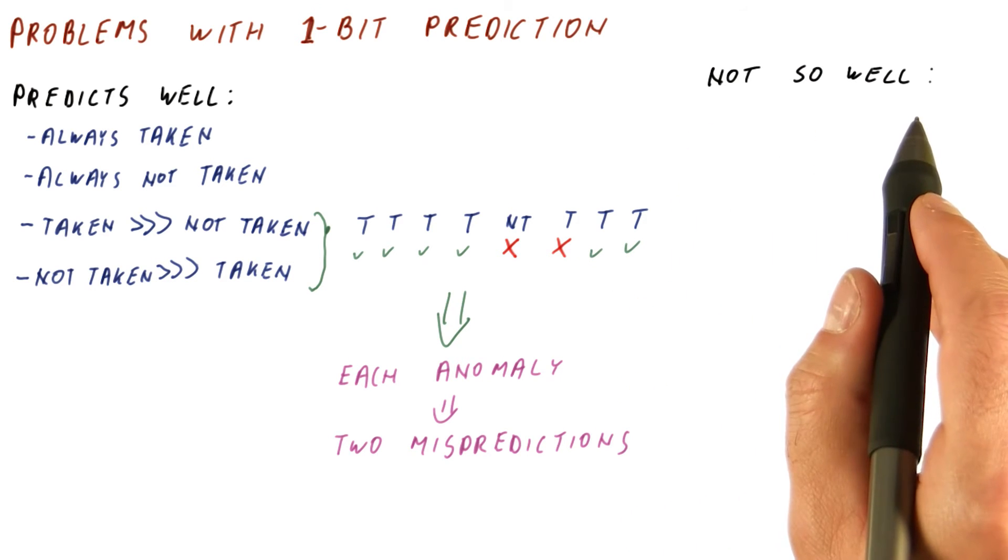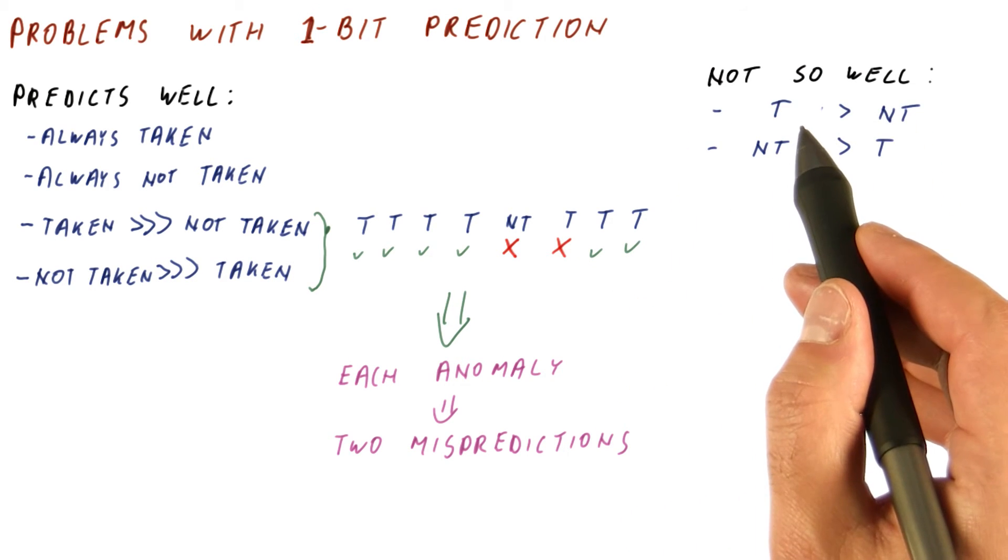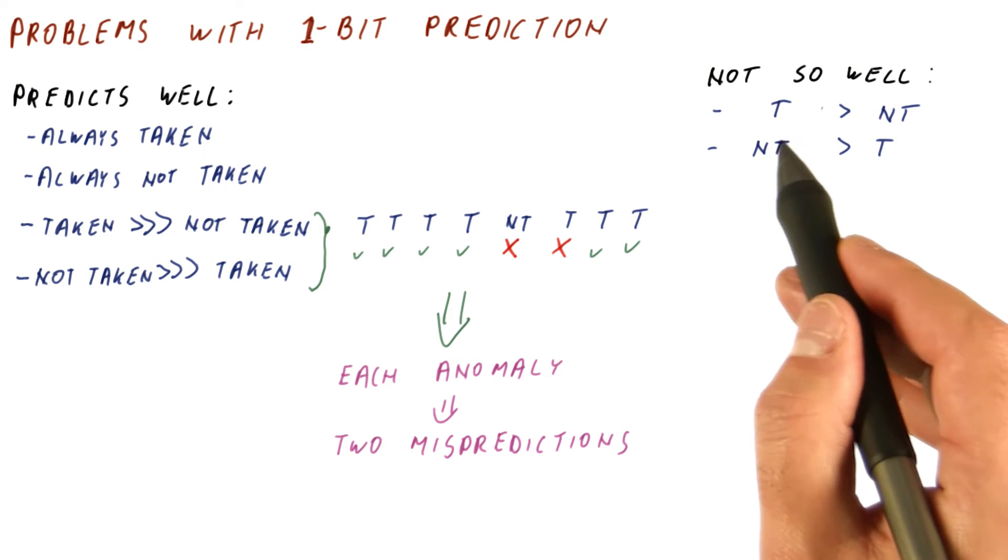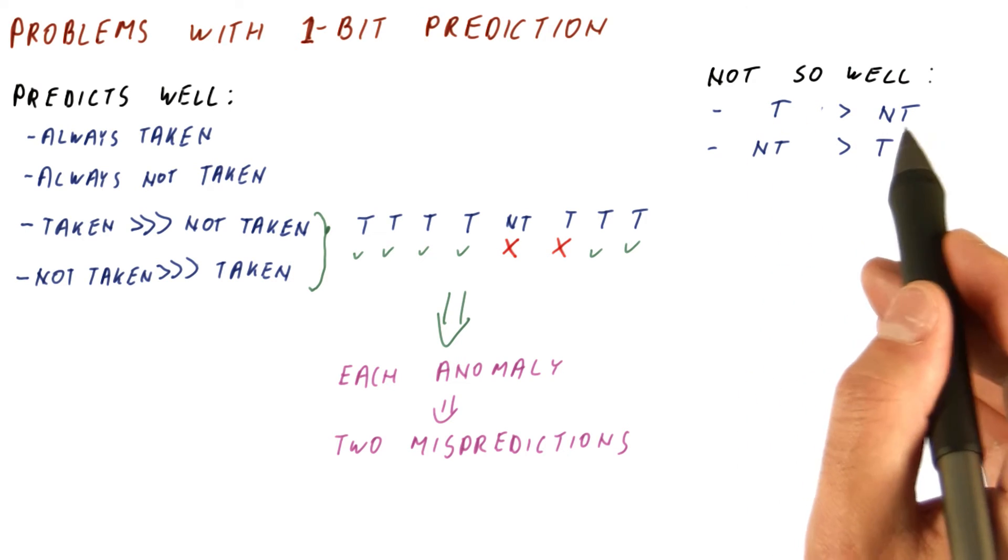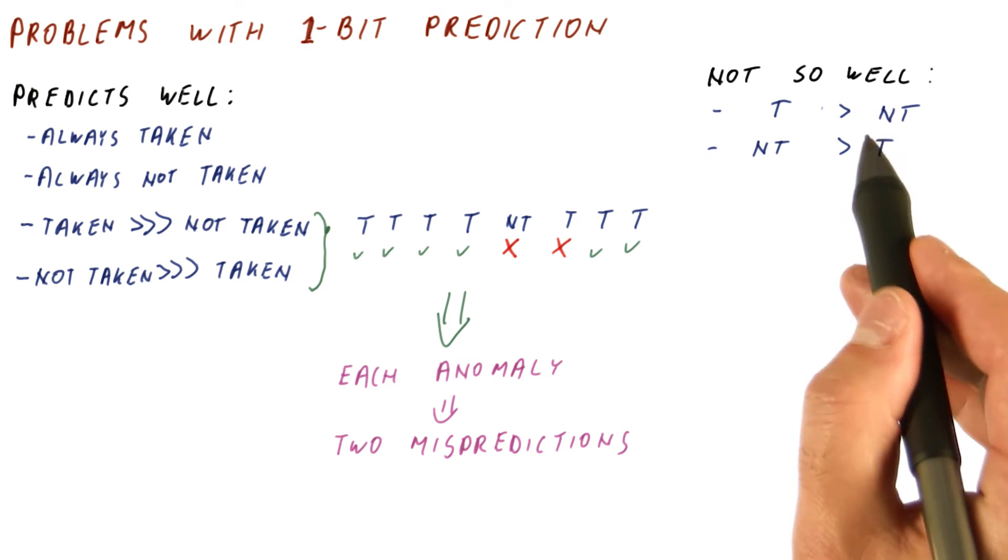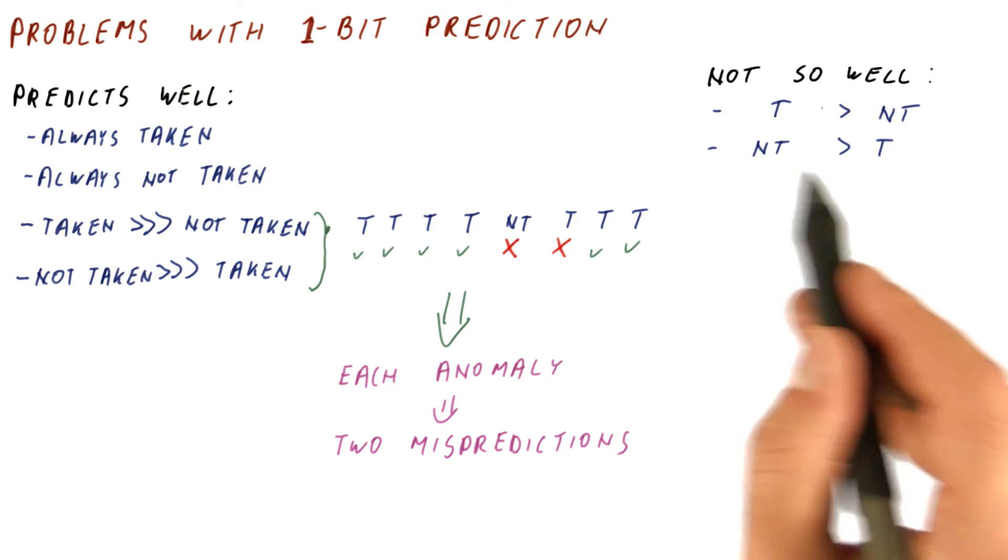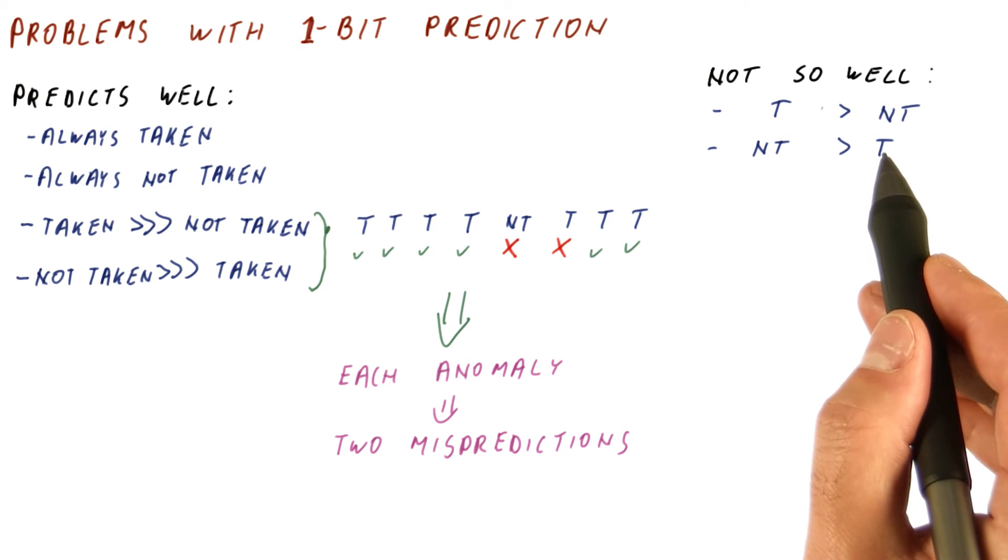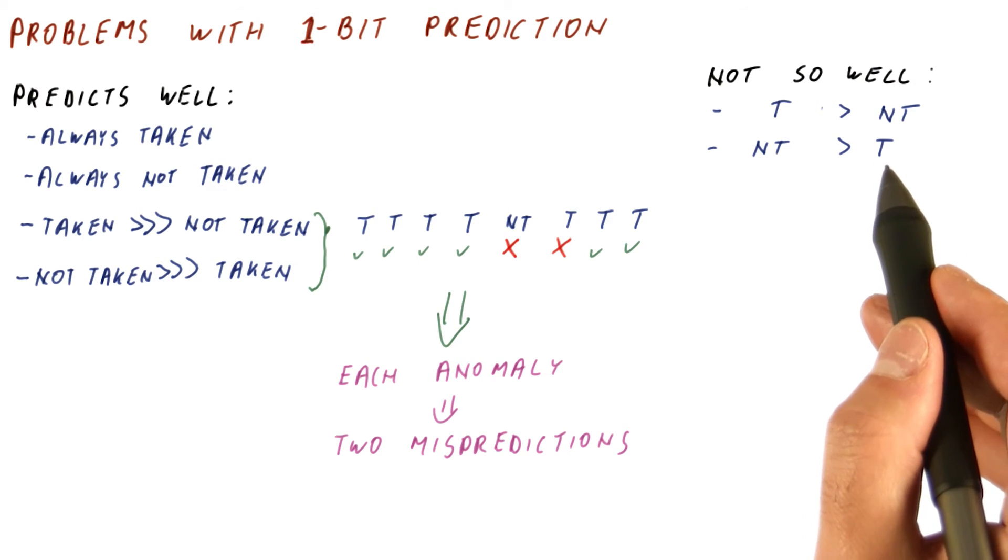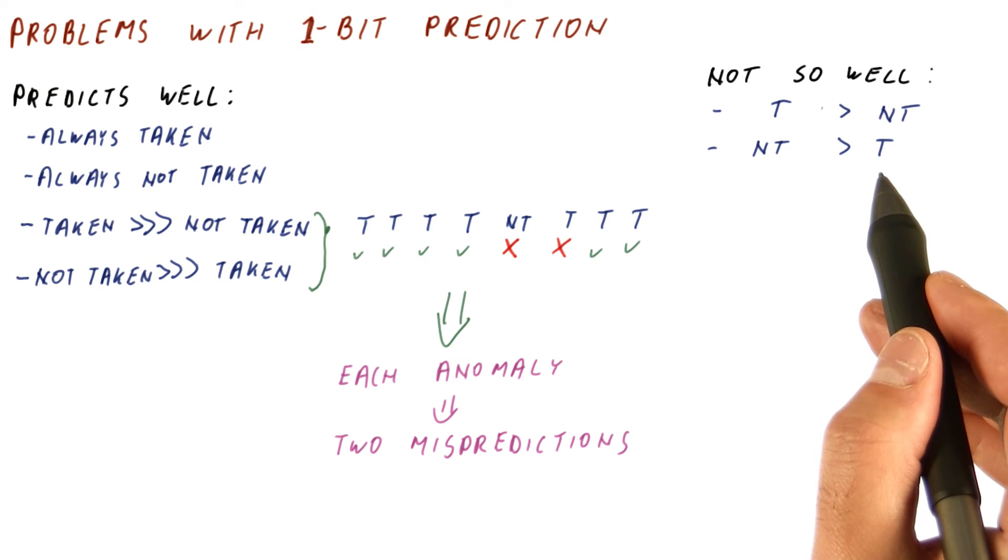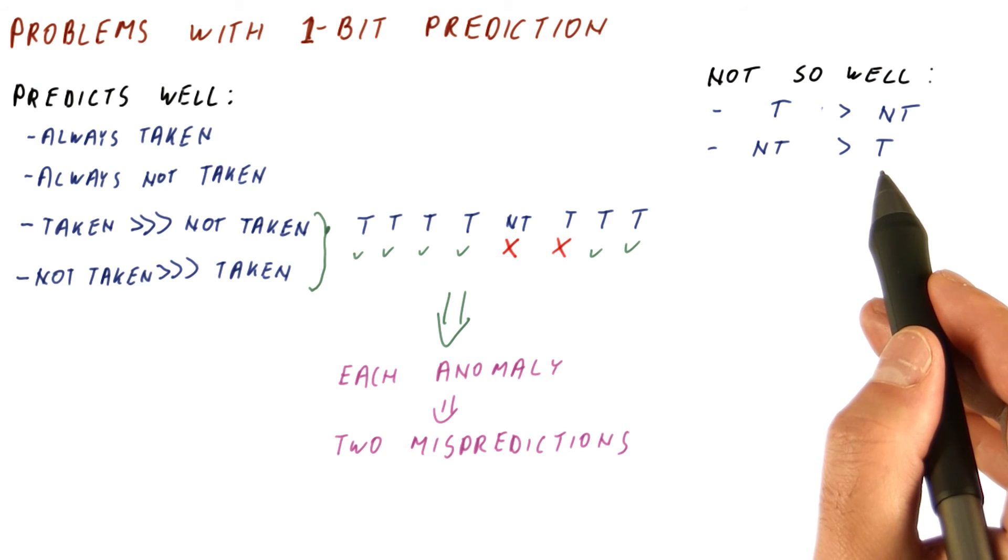So the one-bit predictor will not do so well when the branch is biased towards, let's say, doing more taken branches, but the number of not taken branches is still significant. Or when there is more not taken branches, but the number of taken branches is significant. Because for each of the less dominant behavior, it's going to do two mispredictions, not just one.